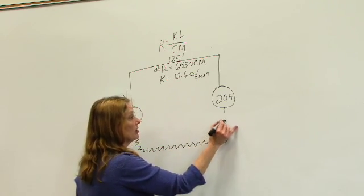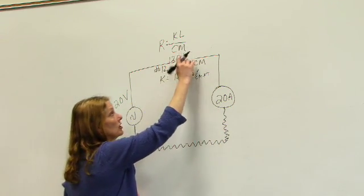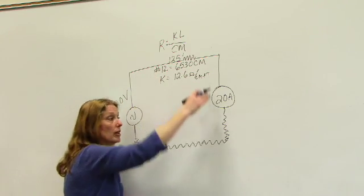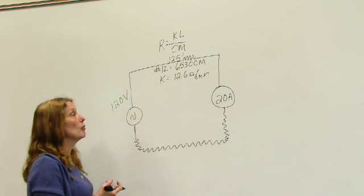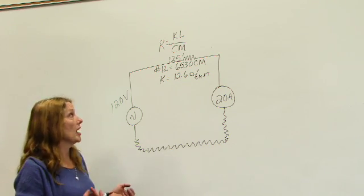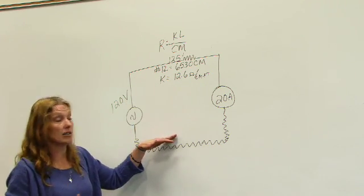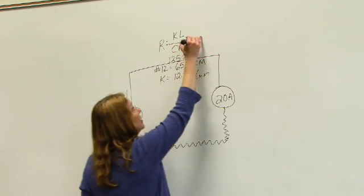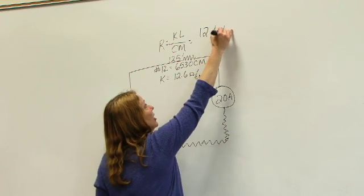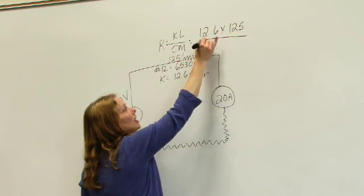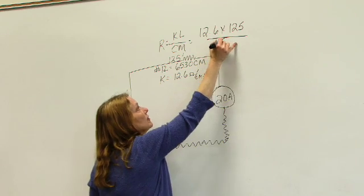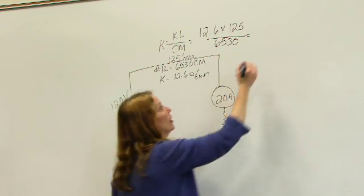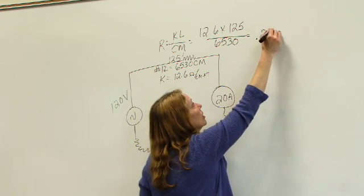We have all the resistance here, same thing here. We have resistance that's traveling throughout from our source to our load coming back. So let's figure out what kind of resistance we have for this wire and this wire because it is additive in this circuit. So if I take and plug this into my formula taking 12.6 times 125 feet divided by 6530, I'm able to come up with a resistance value of 0.241 ohms.